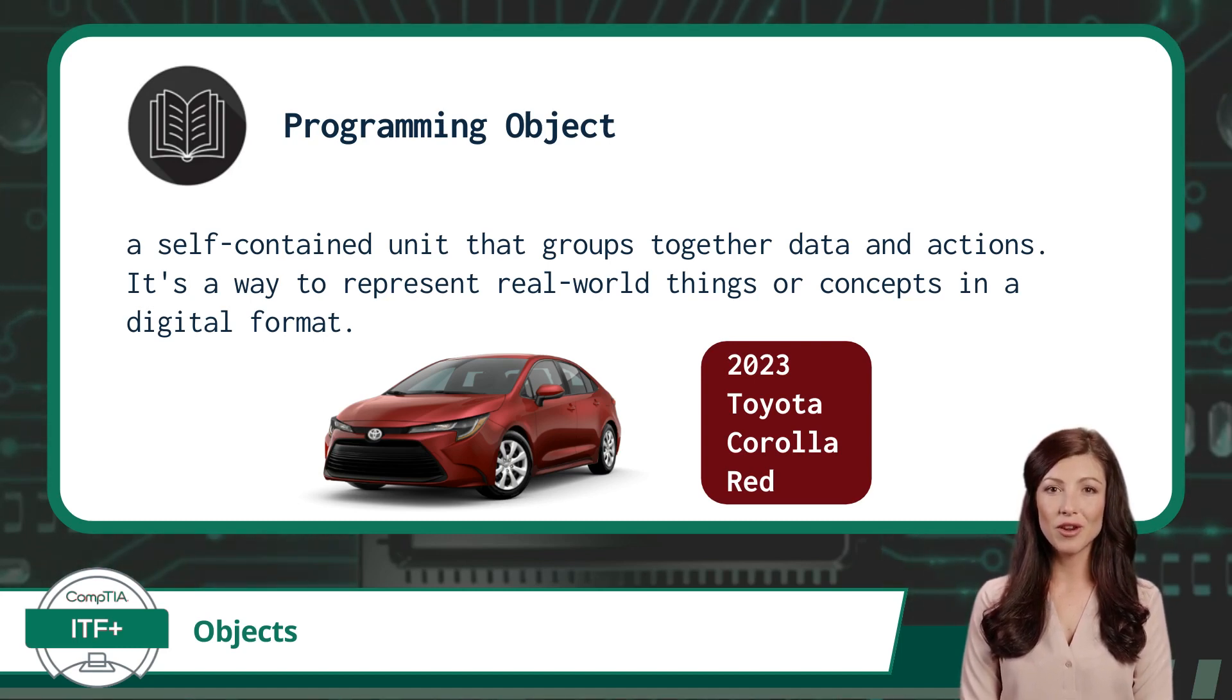For example, if you were developing a software system for an automotive dealership, in this context we could create an object called car. This car object would store details about a specific car model, including its year, make, model name, and color.